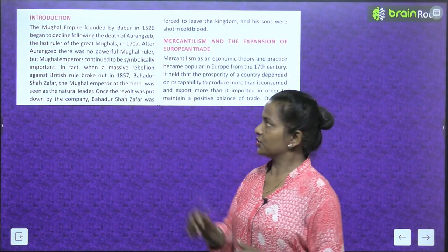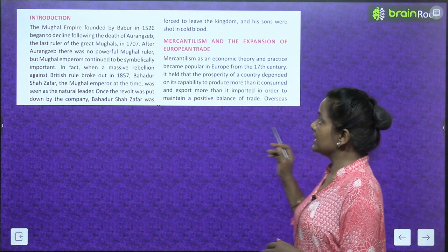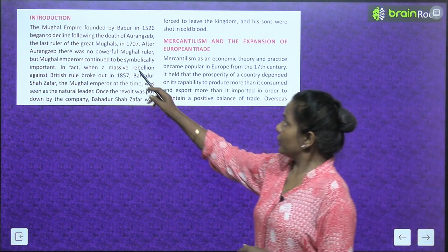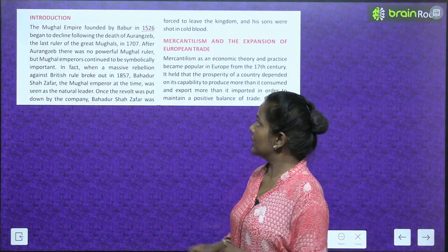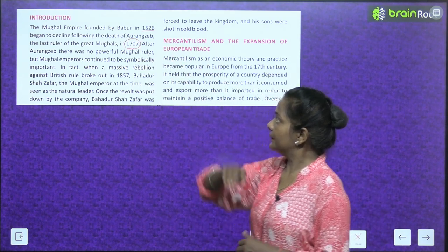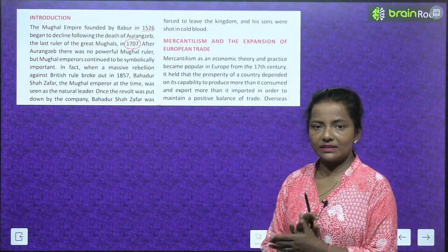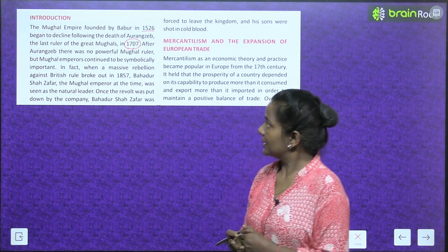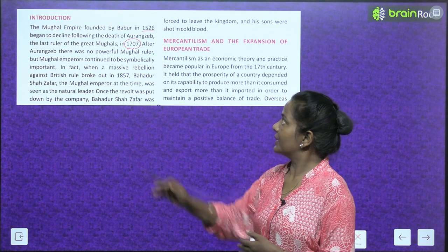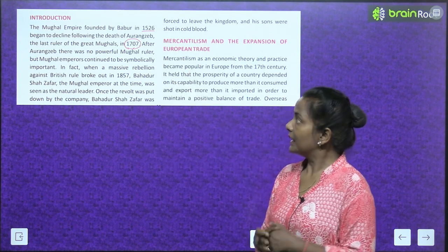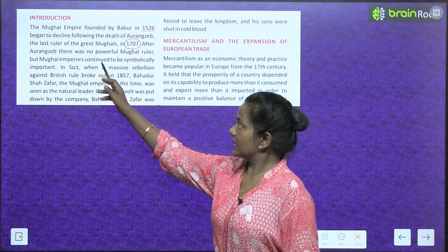Introduction: The Mughal Empire, founded by Babar in 1526, began to decline following the death of Aurangzeb, the last ruler of the great Mughals, in 1707. After Aurangzeb, the Mughal Empire that Babar had founded began its downfall.